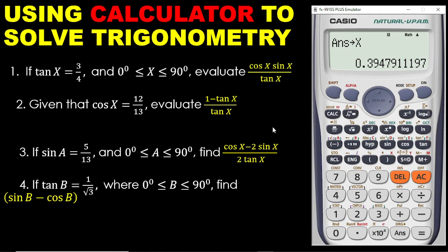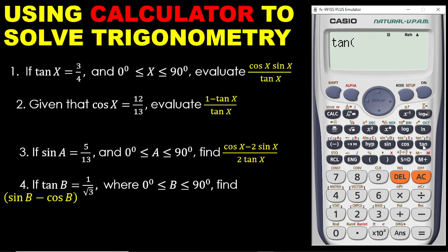Let's see — if I enter cos X, pressing cos, then alpha and X, then close the bracket and press equal to, I am getting the answer. So the question has given you this value. You can even find tan X from this: press tan, then alpha and X, close the bracket, press equal to. It means if cos X equals 12 over 13, then tan X will be 5 over 12.